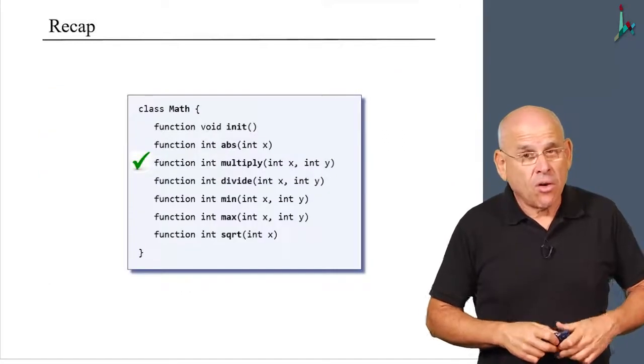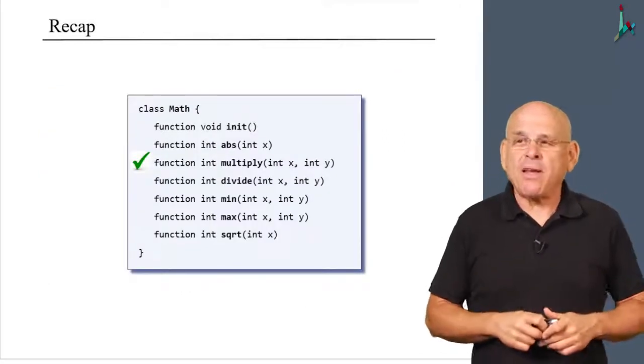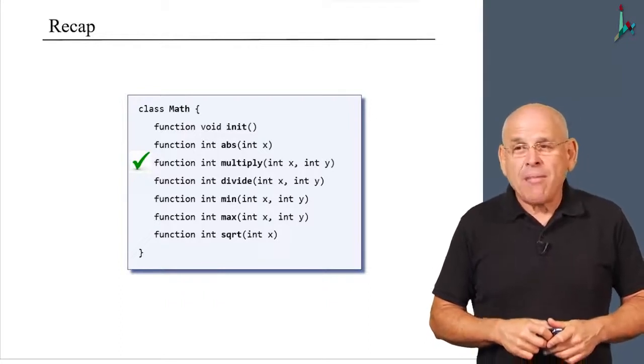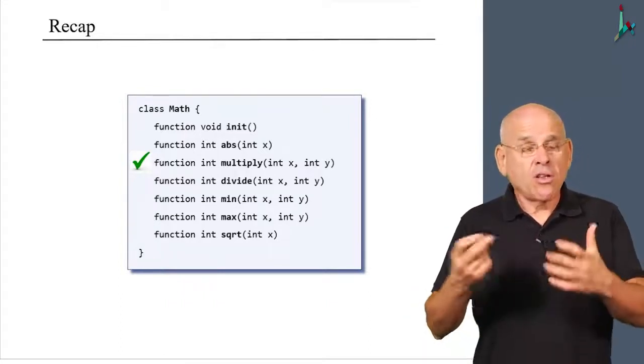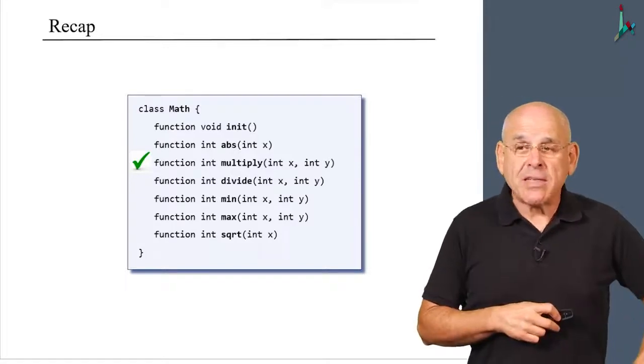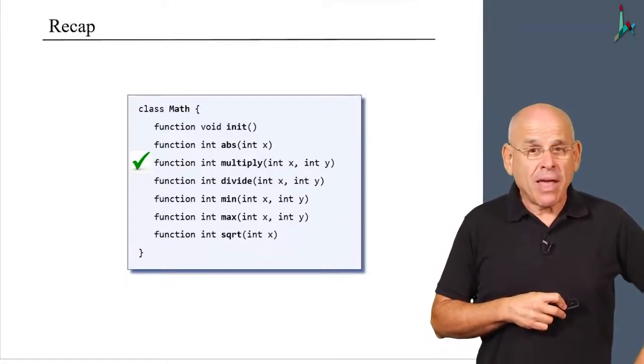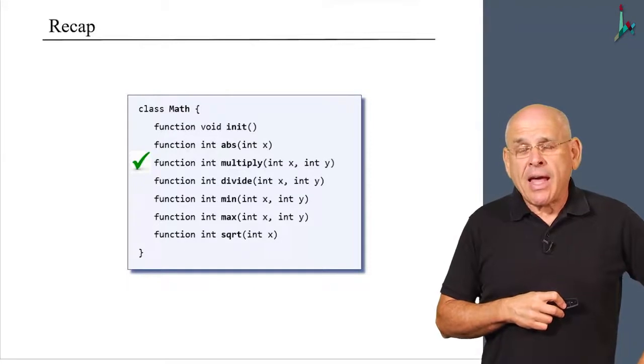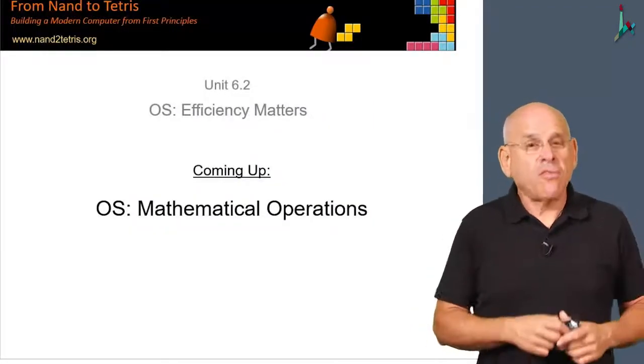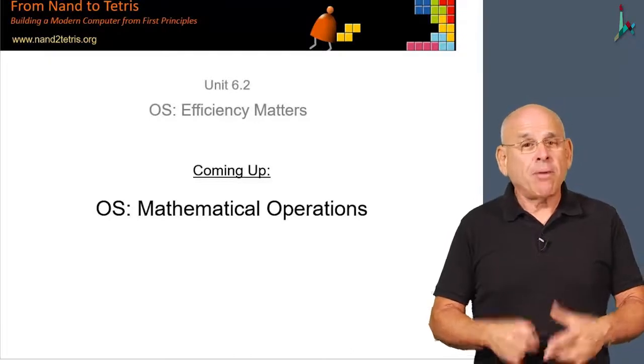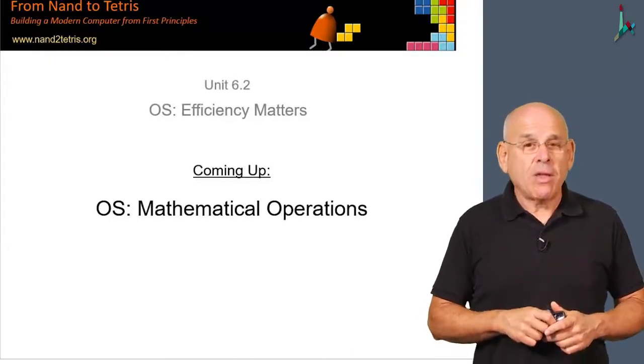All right, so to recap, this has been a unit about efficiency. But as a side effect of talking about efficiency, we also talked about fast implementations of multiplication. And what we'll do in the next unit is continue from this point onward and discuss the implementation of some other mathematical operations.